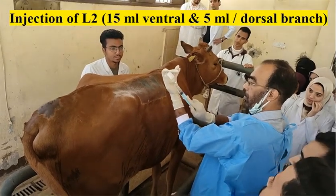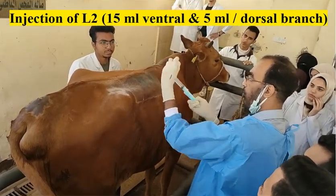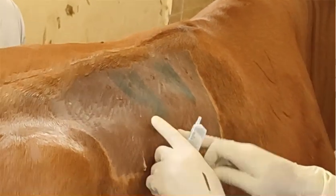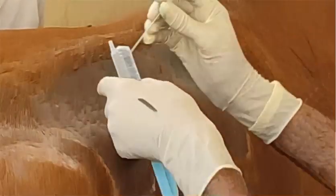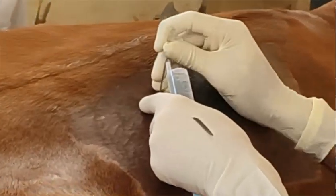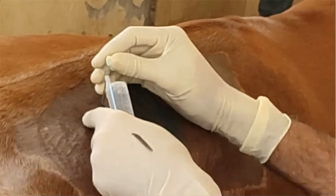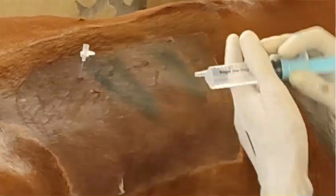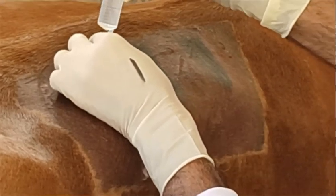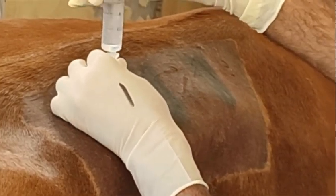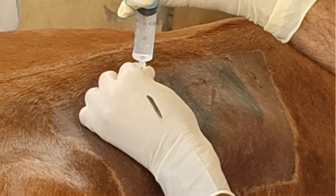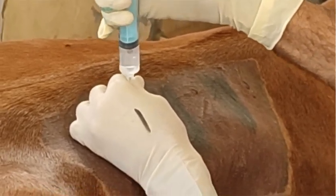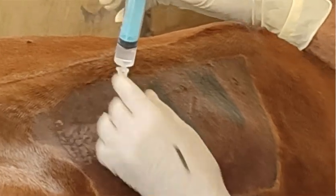Now he will start blocking the three nerves in the applicable manner, blocking L2 first. For L2: 15 ml for the ventral branch, and 5 ml for the dorsal branch.